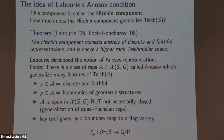A key difference: the set of Anosov representations is open in the character variety, so you can deform them and remain Anosov. But in general, this condition is not closed. These are really generalizations of quasi-Fuchsian representations to higher-rank Lie groups — or convex cocompact representations — but not Fuchsian. A key tool used to study them is a certain equivariant map from the boundary of the fundamental group to a flag variety.